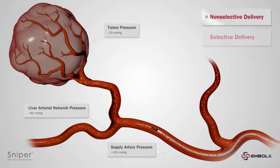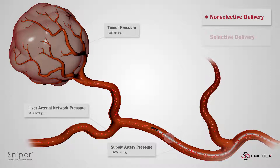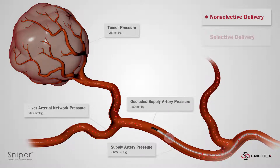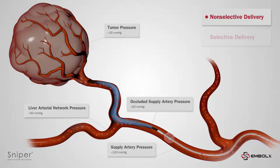In non-selective delivery, the Sniper is advanced to a proximal location where branch arteries are evident between the Sniper's tip and the tumor. The balloon is inflated, occluding the artery and creating a lower pressure zone. This causes the blood flow to slow and redistribute away from non-target arterial networks, delivering embolic agents into the tumor, allowing for improved tumor fill.